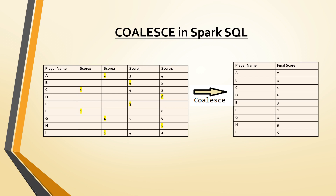For such requirements, Spark provides a very good function called coalesce. It is a built-in Spark SQL functionality which provides the first non-null value from the given dataset.